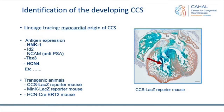If you want to identify the cardiac conduction system, we know for sure now that it's of myocardial origin, so it's not neural tissue. You can visualize the conduction system with several markers, like HNK1, TBX3, and HCN4. There are also some transgenic animal models to delineate the developing conduction system, such as the CC-LACZ reporter mouse that also visualizes the conduction system.